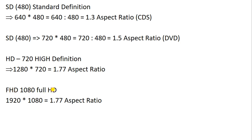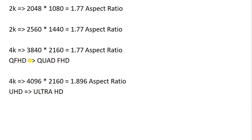After HD, FHD came — Full HD — meaning 1080p. The pixels are 1920×1080: 1920 pixels in width and 1080 pixels in height. The aspect ratio of 1920×1080 is also 1.77, and this is the Full HD or 1080p standard.